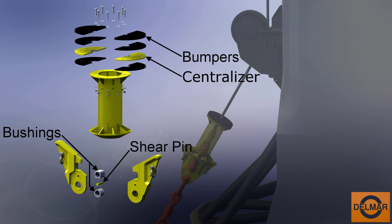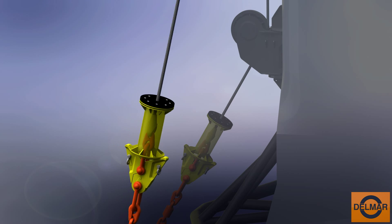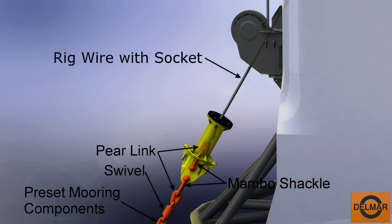The Delmar Quick Release is easily assembled and installed in line with preset mooring components. The detailed connections are planned into the mooring system design.